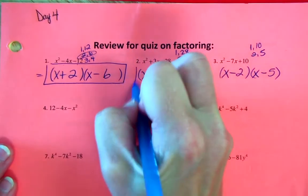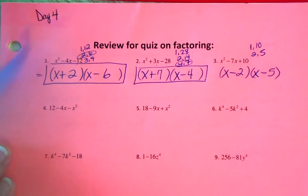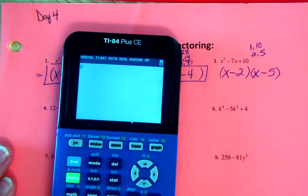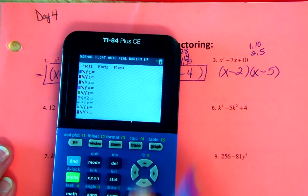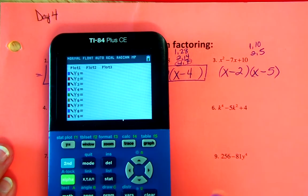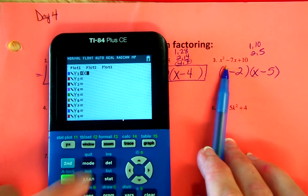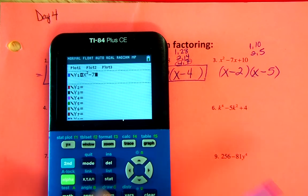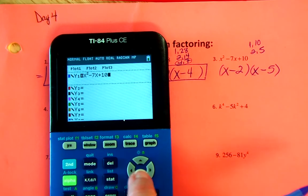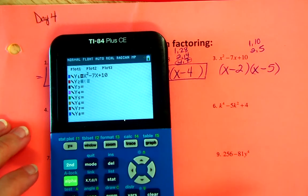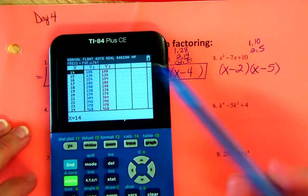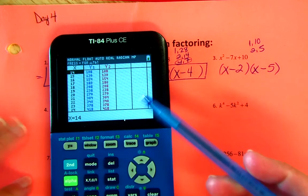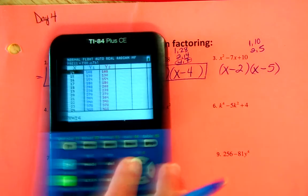I'll box all of those answers. Then we'll check the last one to confirm we're right — or to remind you how to check. Go to Y=, clear everything, type in the original trinomial, then type your factors into line 2. Go to your table, and if the numbers in the table match, you did it correctly.